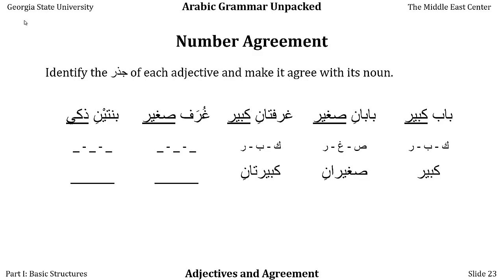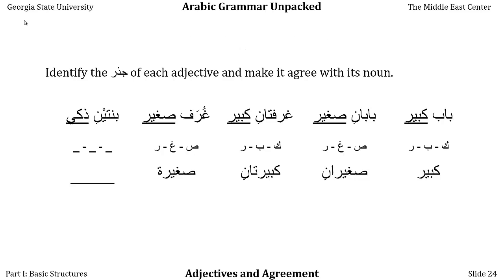Notice that they rhyme, just like baban saghiran does. A lot of times you will hear noun-adjective phrases rhyming, especially the further back you go in time. The next example: ghoraf is the plural of ghorfa, so ghoraf means rooms. And then we have saghir — its jidhr is sin-ghain-ra. But ghoraf is non-human plural, so non-human plural is feminine singular. Saghir becomes saghira. So ghoraf saghira, small rooms.